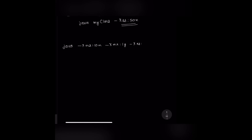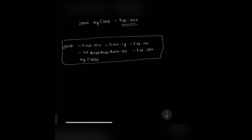We can combine all these parameters together — define the nursery size as 10 MB, the keep area ratio as 50 percent, the thread stack size as 50 KB, and then provide our class name. These are some of the basic configuration parameters. For a detailed list of all configuration parameters, I will add the official documentation link in the description.